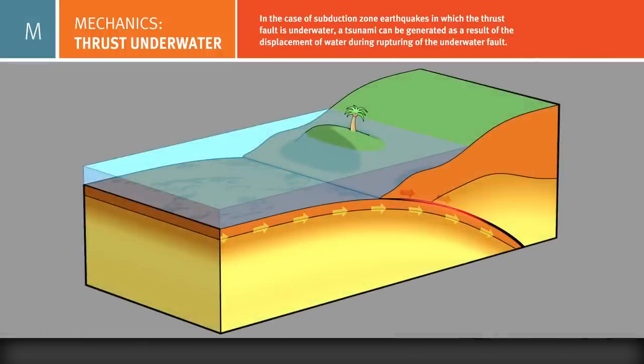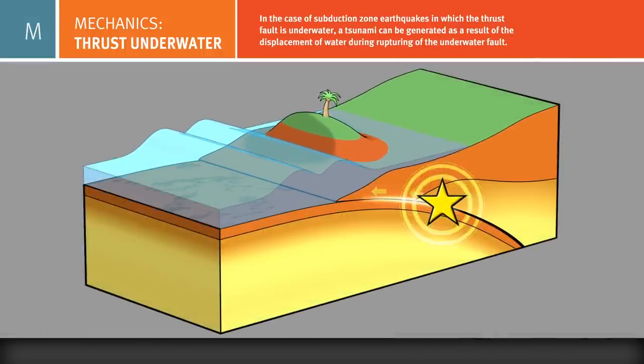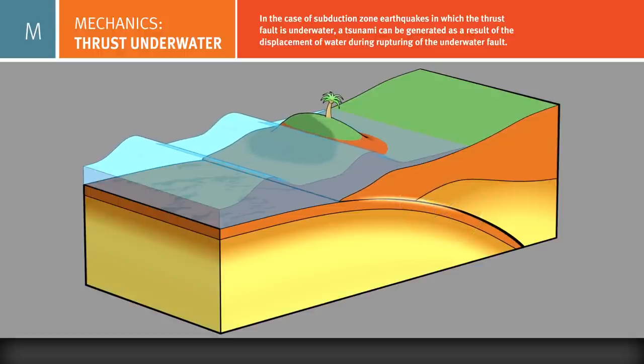If a subduction zone earthquake occurs along an underwater thrust fault, the associated uplift can displace a huge volume of water. The resulting wave is known as a tsunami.